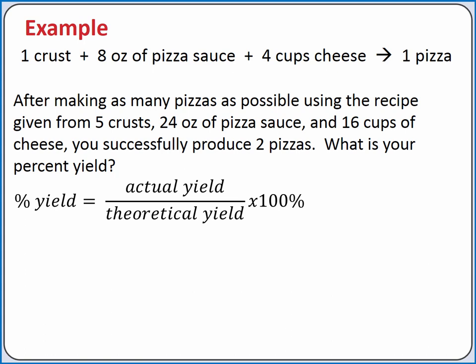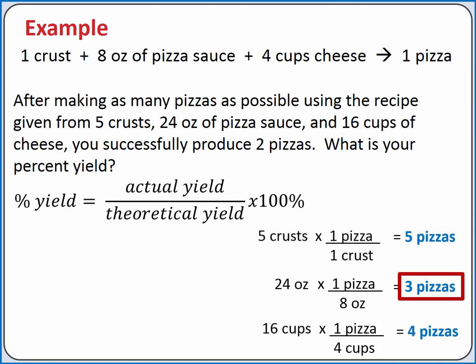Our equation for percent yield is actual yield divided by theoretical yield times 100%. We calculated the theoretical yield based on our limiting reagent. Our theoretical yield is 3 pizzas.